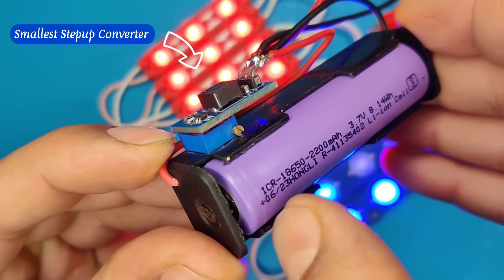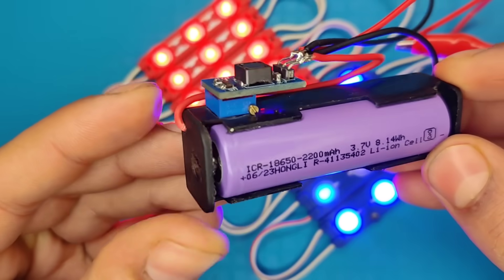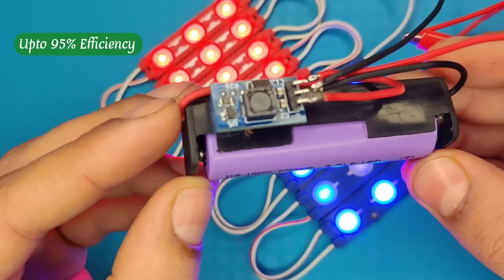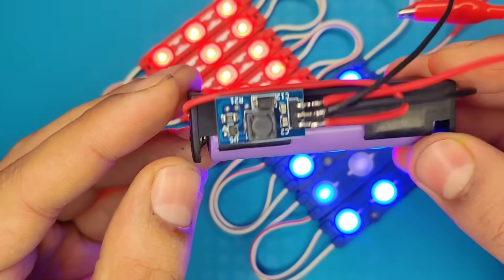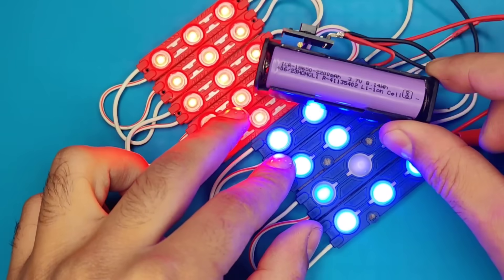how to make world's smallest step up voltage boost converter with up to 95% high efficiency output and can boost adjustable output from 3.7 volts to 30 volts.